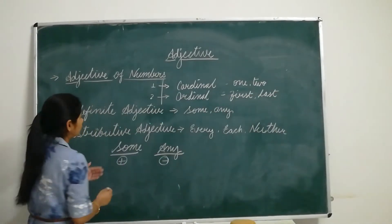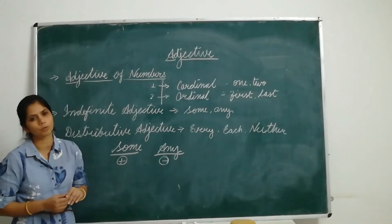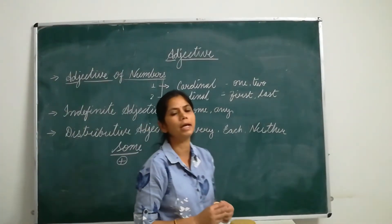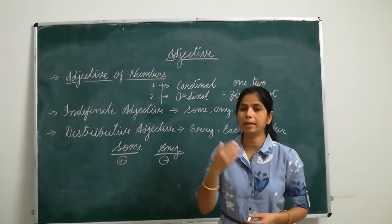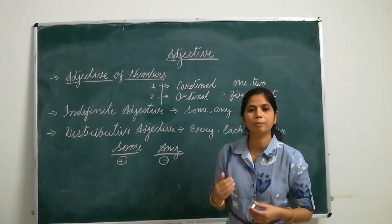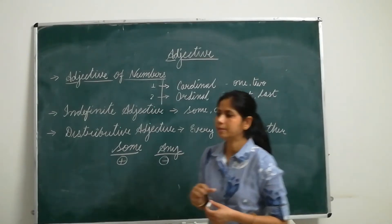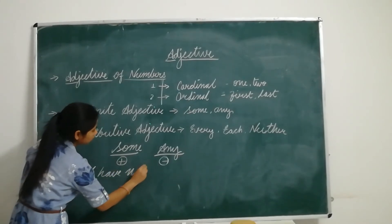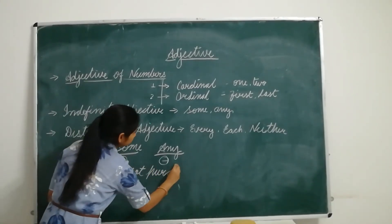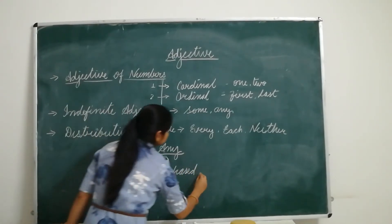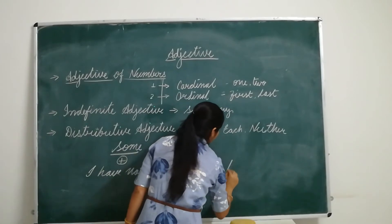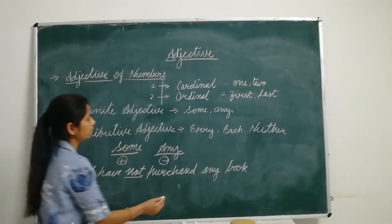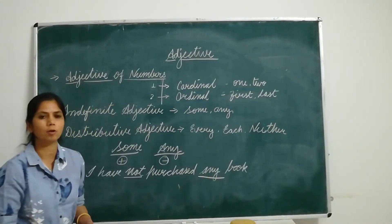For example: 'I have already purchased some books.' This sentence is not a negative sentence, that's why we have used 'some'. Now, if I make this sentence negative: 'I have not purchased any book.' Because this sentence is negative, that's why we have used 'any' in place of 'some'.